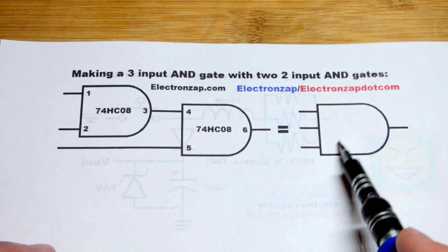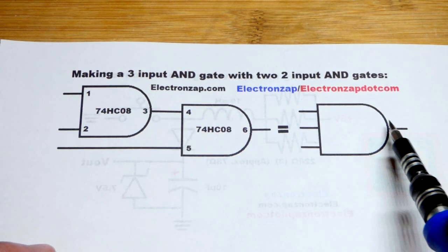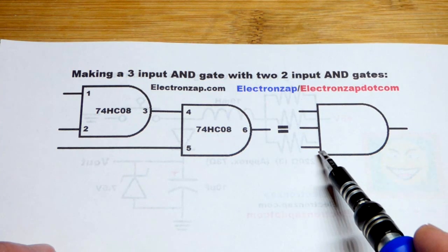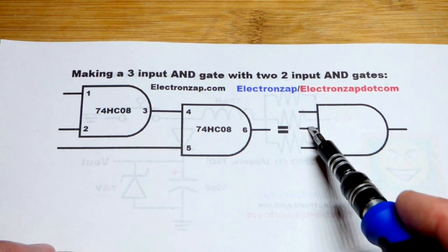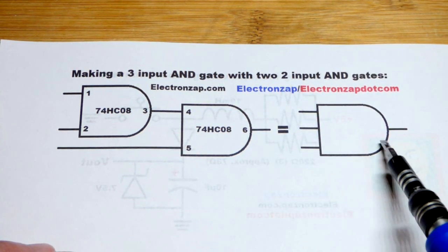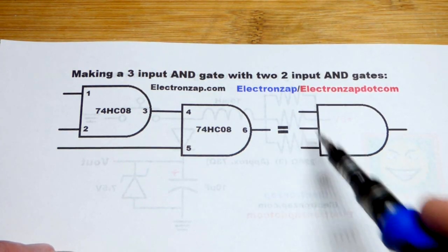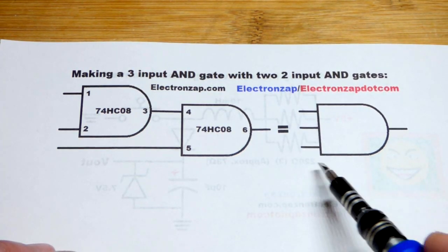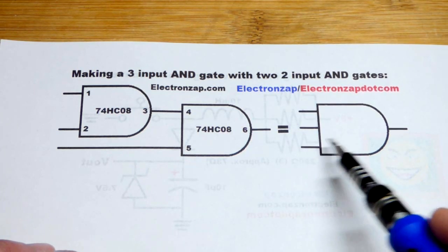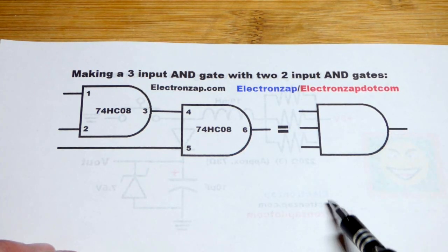So now in this video, if we need a three input AND gate, what that means is we will need three high input signals for the output to be high. If any of them are low, or all of them low, but if at least one of them is low, the output is low.